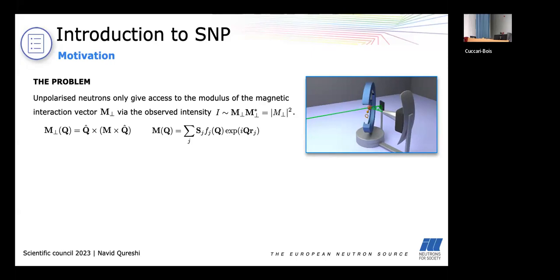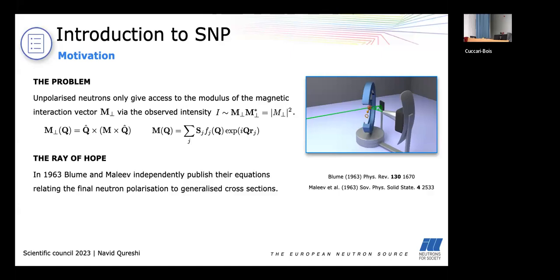So the ray of hope came in 1963 when Blum and Maleev independently published equations which relate the final neutron polarization with generalized cross sections and showed that you can extract so much more information. And the dream, here I cite Jane Brown, was to be able to measure all those terms in the equations precisely and independently.